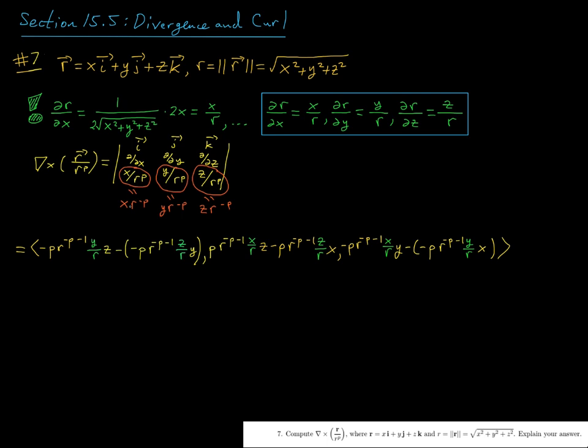So let's go ahead and differentiate. Now it's helpful to write these expressions as x times r to the negative p, y times r to the negative p, and z times r to the negative p. And when we differentiate, go ahead and use these facts again as we did when we computed the divergence of this field. All right, so here we go. It's kind of a mess, but fortunately it simplifies.